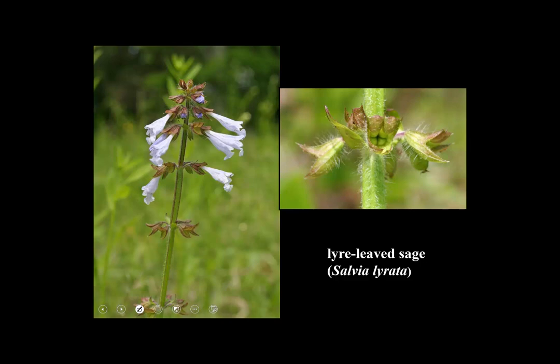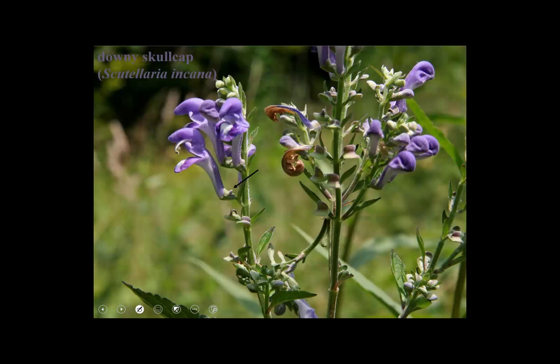Let's take a look at some flowers and fruits of the mint family. This is a lovely native wildflower called lyre-leaved sage. On the left it's in flower, showing the square stems and opposite leaves. On the right is a close-up of the fruiting calyx — look inside and you see four nutlets, the characteristic fruit of the mint family, Lamiaceae.